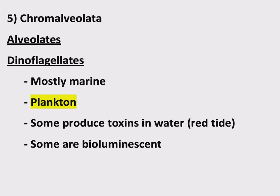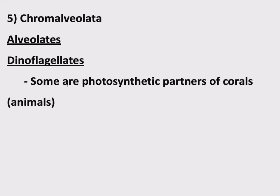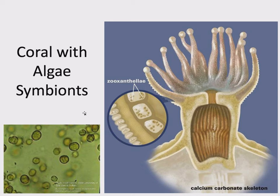Another notable group within dinoflagellates: some are photosynthetic partners of corals. We will see this exact slide again when we talk about animals and invertebrates. Corals are part of a group of animals, not protists, but they have a symbiotic relationship with these algae — these dinoflagellate protists — allowing them to effectively do photosynthesis. The dinoflagellates do photosynthesis, and the coral gives them a safe place to live so they're not easy prey in the marine ecosystem. So some dinoflagellates are the photosynthetic partners of corals.